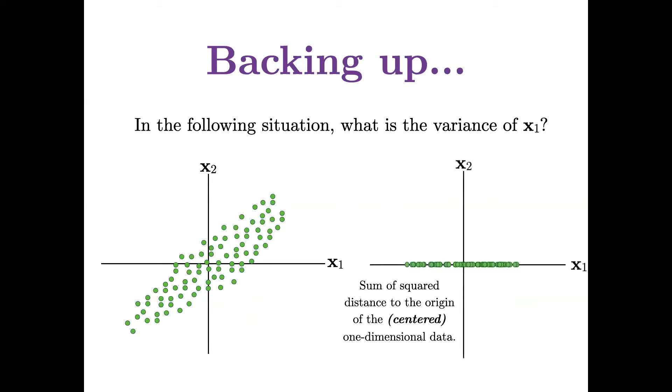Well, it's the sum of squared distances to the origin of the x1 coordinates, right? So it's like projecting the data onto the axis for x1, which is really just setting all the x2 coordinates to zero. It's dropping x2 out of the picture. So now I have a number line of data, and I take the sum of squared distances to the origin because the data is centered.